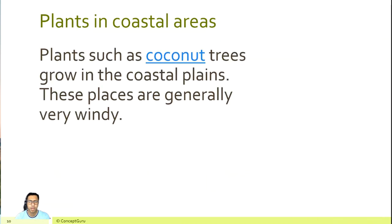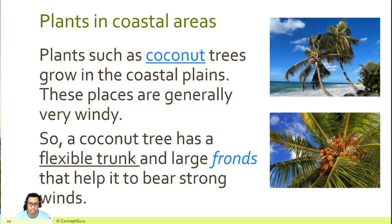Plants in coastal areas — plants such as coconut trees grow in coastal plains. These places are generally very windy. So a coconut tree has a flexible trunk and large fronds that help it to bear strong winds.